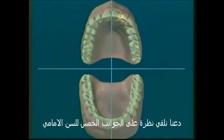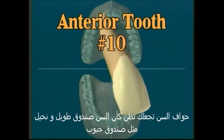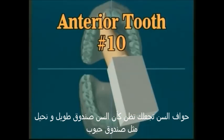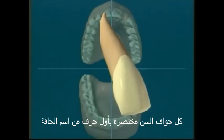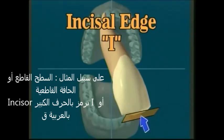Let's look at the five sides of an anterior tooth. It helps to think of the sides of an anterior tooth as the same as a tall, skinny box, much like a cereal box. Any tooth in the mouth is similar to a box with five sides above the gum line. All tooth surfaces are abbreviated by the first letter of the word. The incisal surface, also referred to as the incisal edge on anterior teeth, is abbreviated as a capital I.